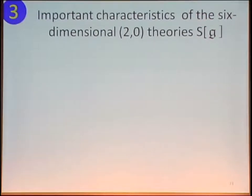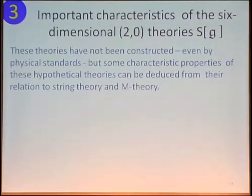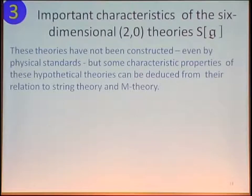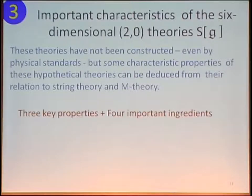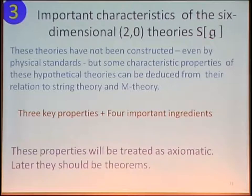These interacting theories — I'll call them S(G) for simply-laced G — and we're going to try and learn about their dynamics. In a proper presentation, I would then talk about some interesting developments by a number of mathematicians having to do with extended topological field theory, but we don't have time for that, so we're going to skip to describing the characteristic properties of these theories. I stress that they have not been constructed even by physicists' standards, and we're simply going to use string theory and M theory to deduce their properties.